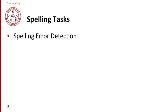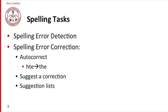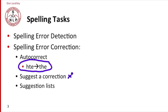We can distinguish a number of separate tasks in spelling correction. One is the detection of the error itself, and then the correction of the error once you've found it. We might automatically correct an error if we're positive we know the right answer — so 'HTE' is a very common misspelling for 'the', and many word processors automatically correct it. We might suggest a single correction if only one is very likely, or suggest a whole list of corrections and let the user pick.